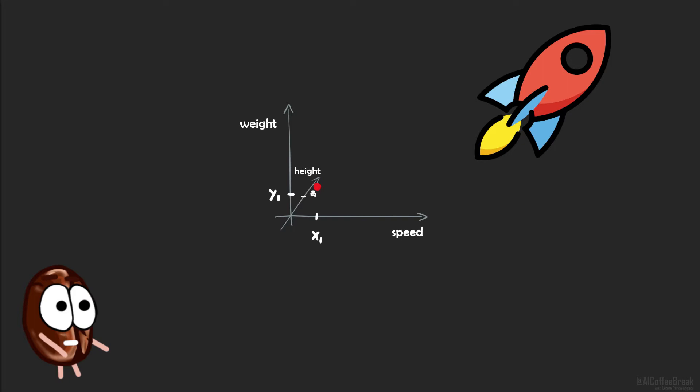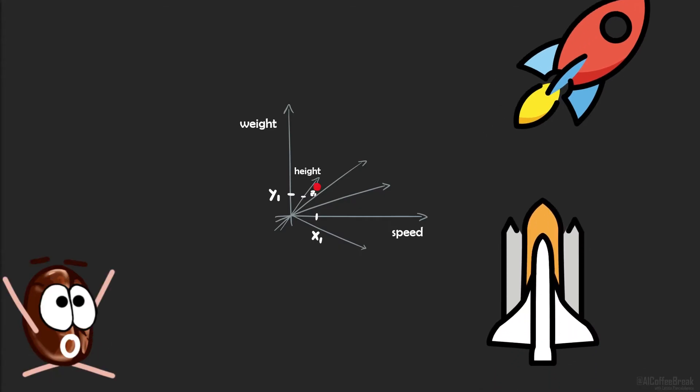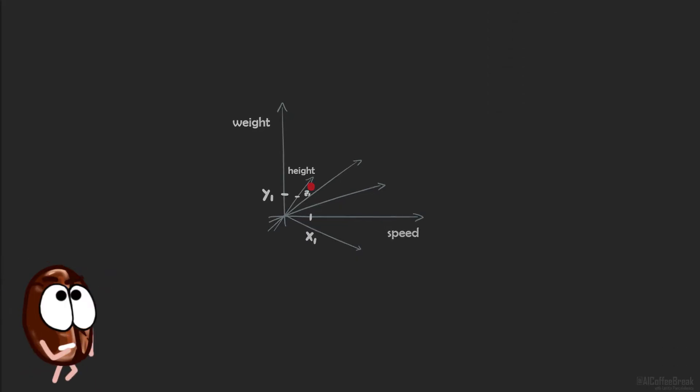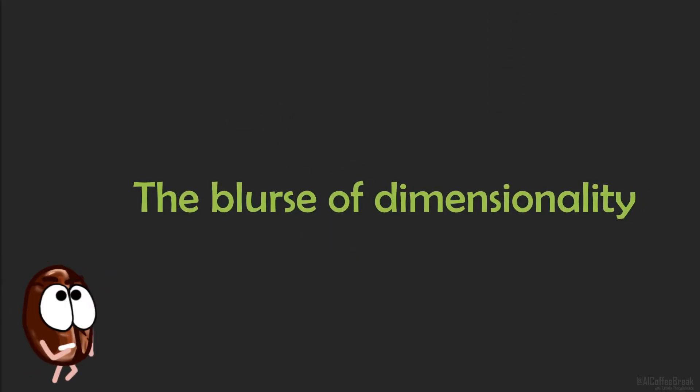And theoretically, nothing stops us to increase the number of dimensions or features to infinity. We take whatever we can to characterize a point, because these features can be then used by a machine learning algorithm to differentiate points one from another. But what do high-dimensional spaces bring with them?